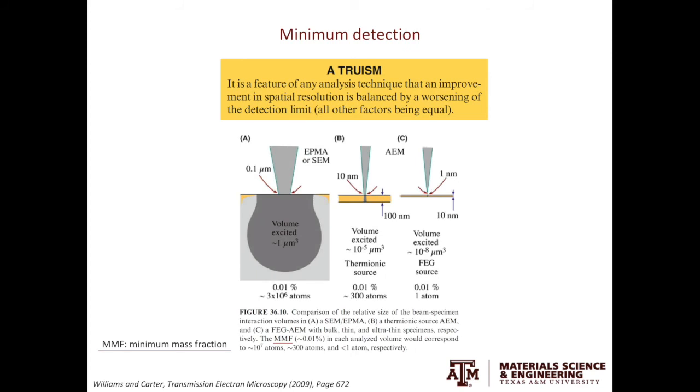In addition to the spatial resolution, another thing people are interested in when doing TEM EDS is the minimum detection. While reading the Williams and Carter transmission electron microscopy textbook, I was impressed many times by the wittiness of the authors. What the authors stated here is that between the spatial resolution and minimum detection, there is a truism. In many cases, if we try to improve the spatial resolution, we will sacrifice the minimum detection. While improving the minimum detection, we will sacrifice the spatial resolution.